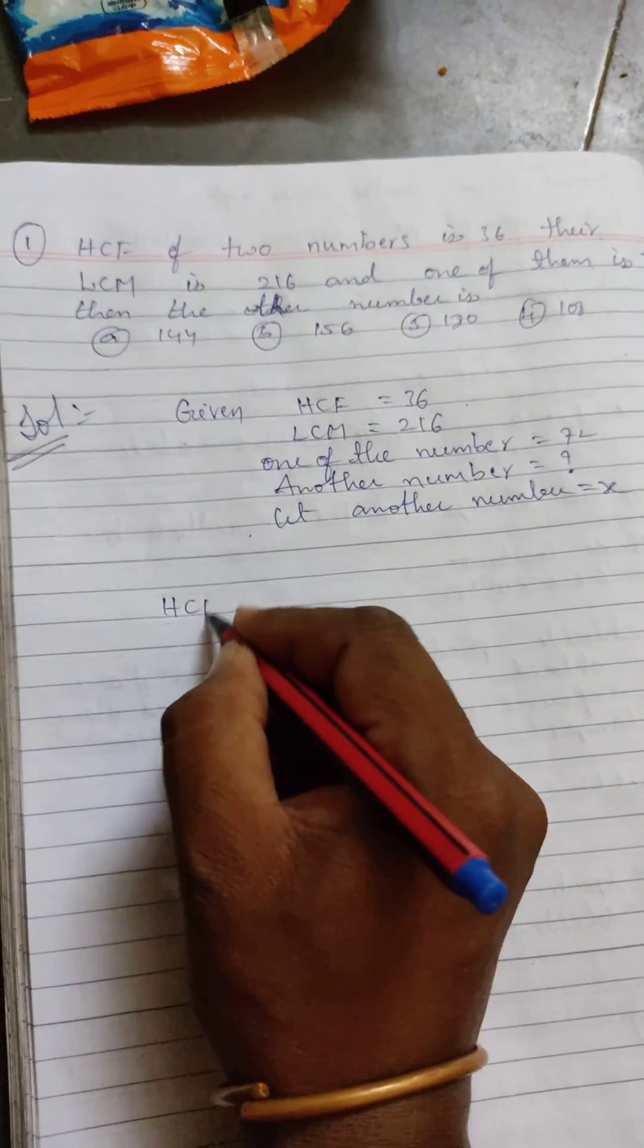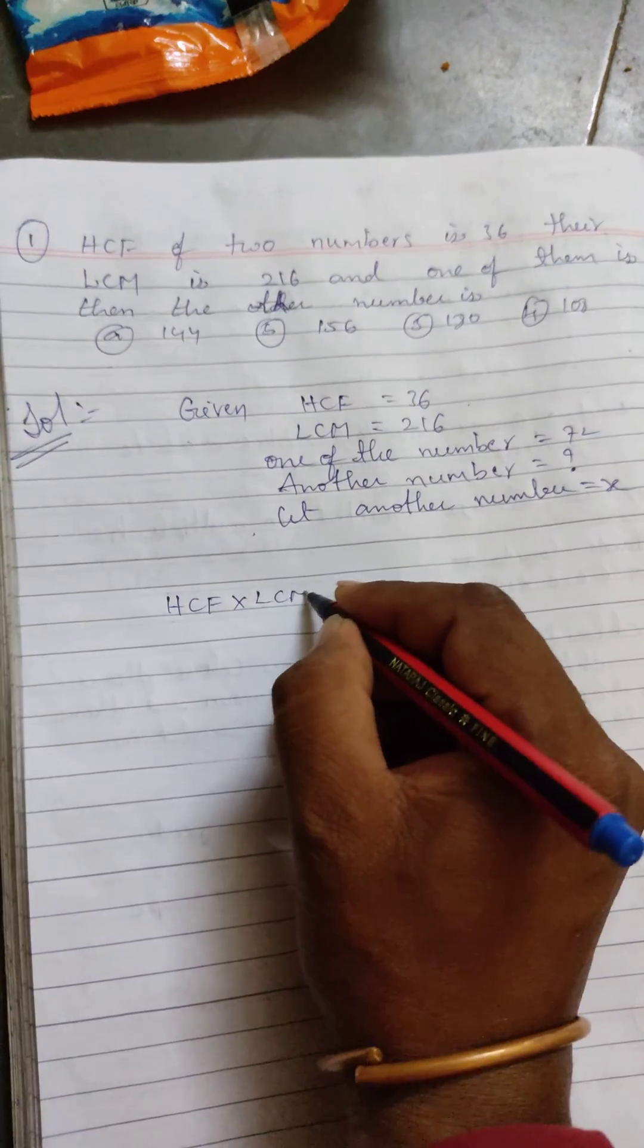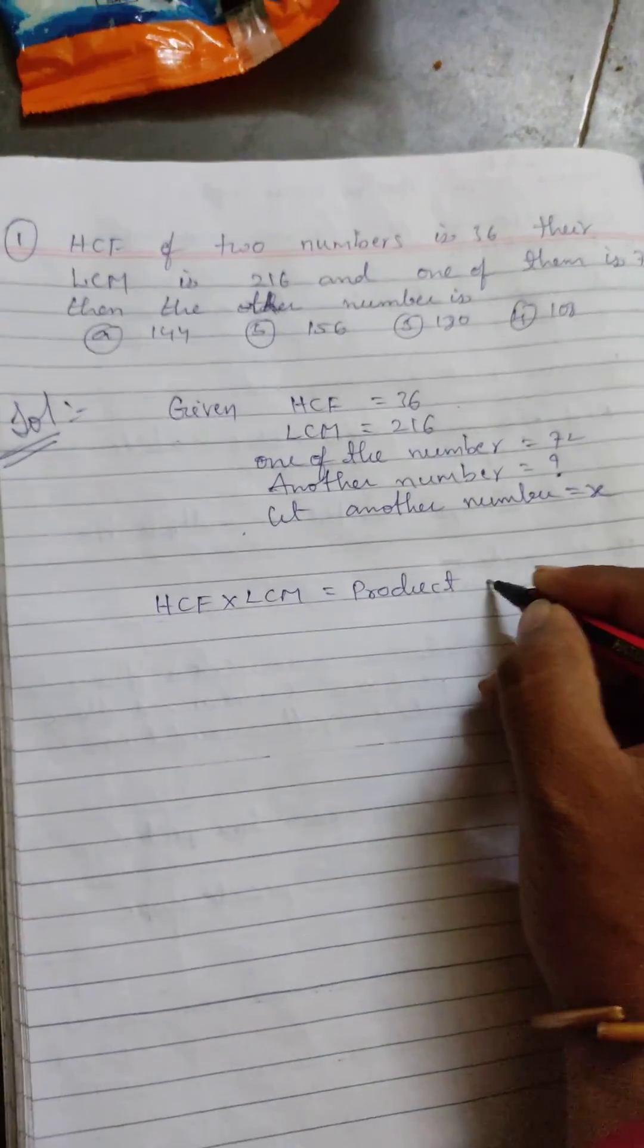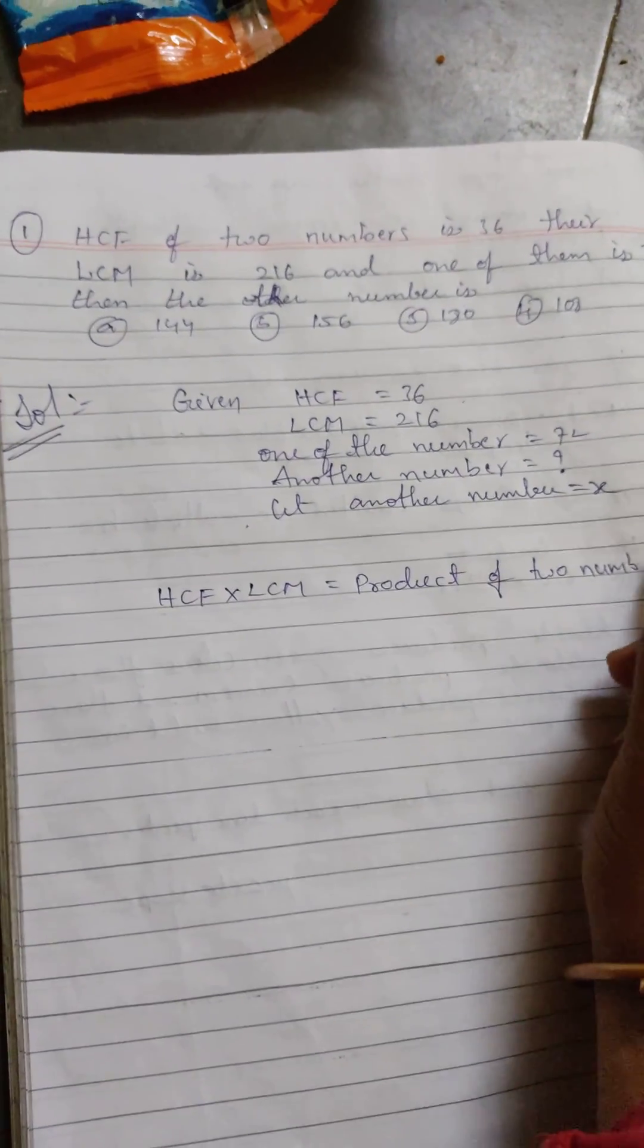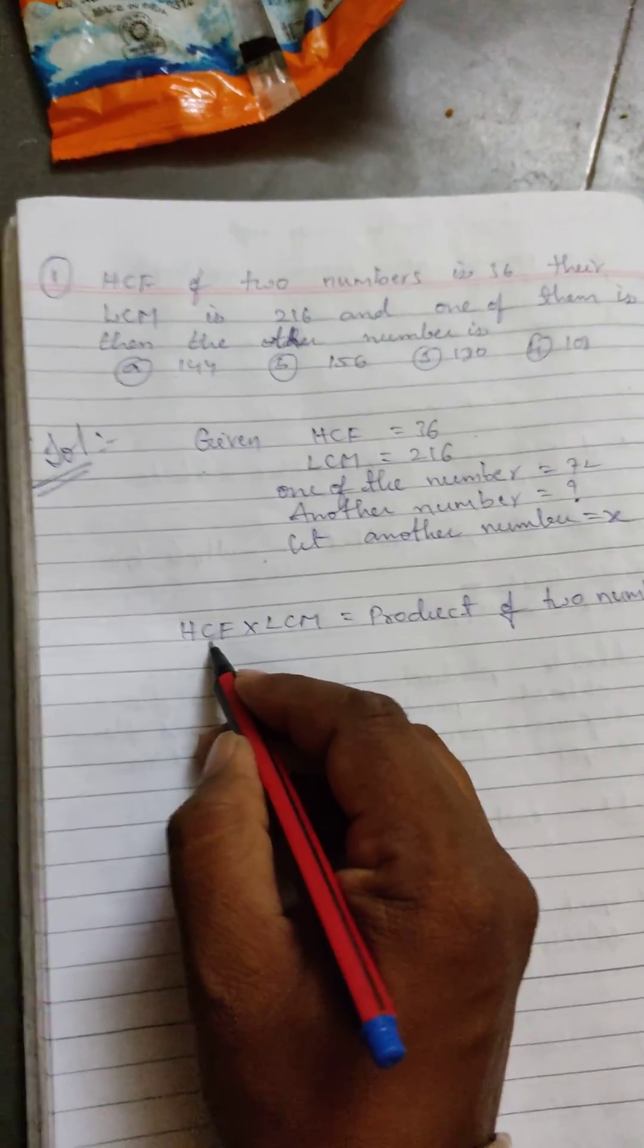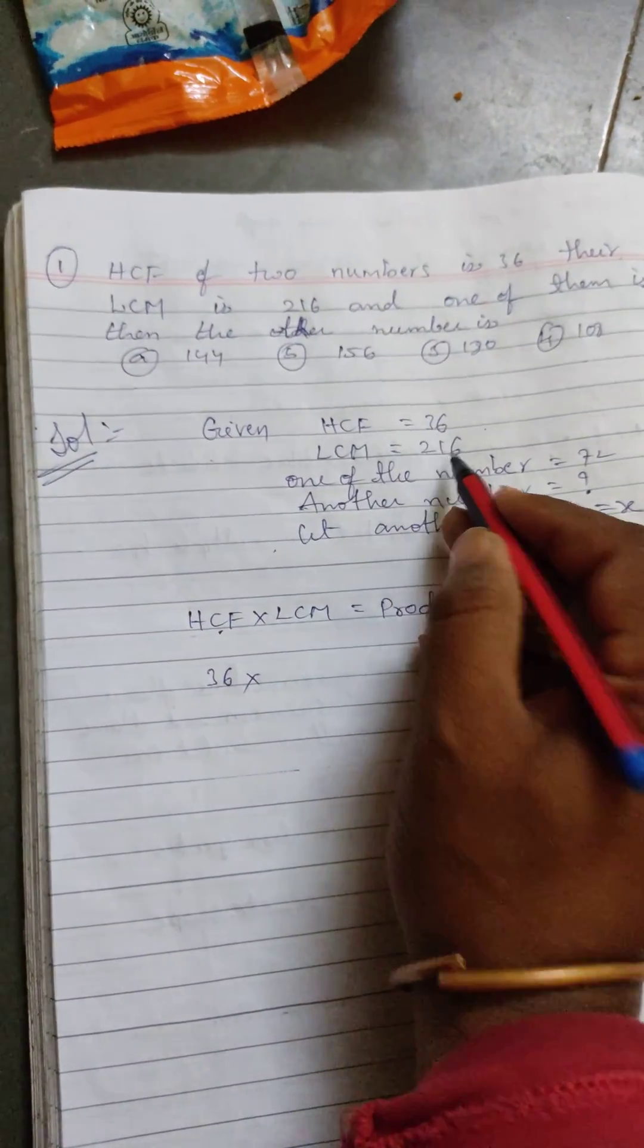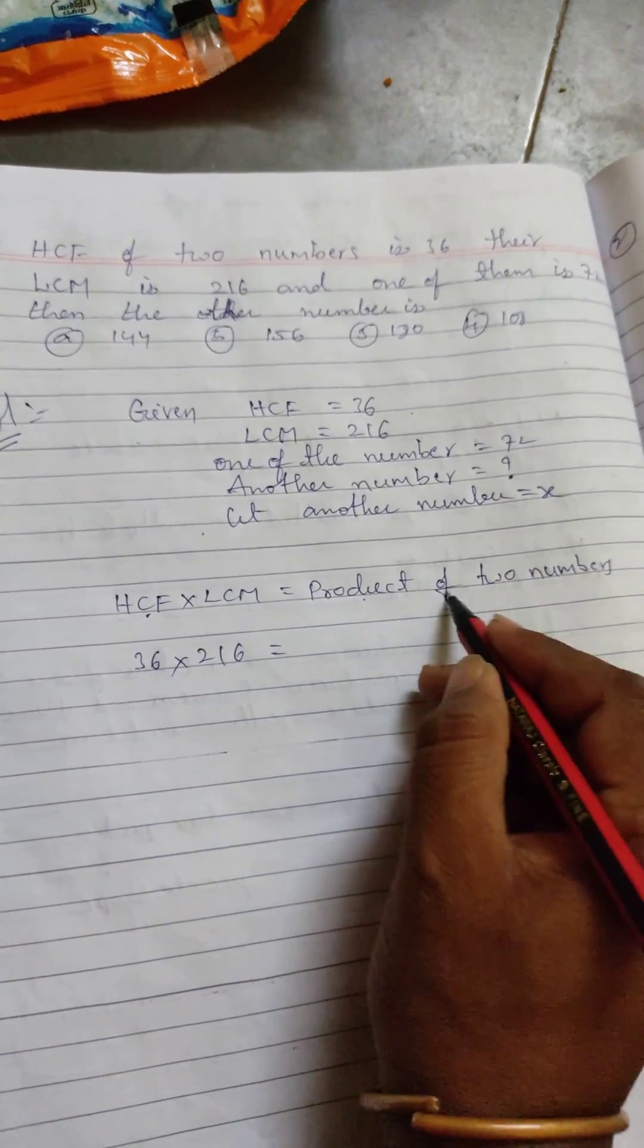HCF into LCM is equal to product of two numbers. Product of two numbers, okay? HCF, how much they give? 36 into LCM, what did they give? 216. Product of two numbers means which two numbers? This two numbers, 72 into x.